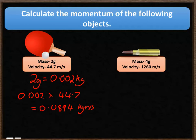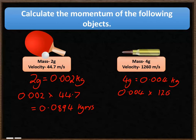The bullet has a slightly larger mass: 4 grams, which converts to 0.004 kilograms. Multiplying by its velocity of 1,260 meters per second gives a momentum of 5.04 kilogram meters per second.